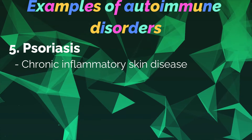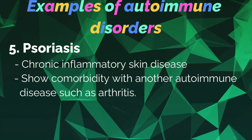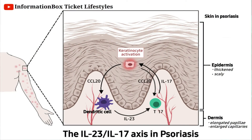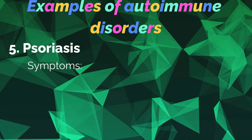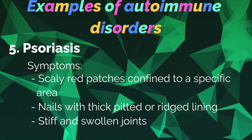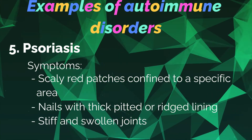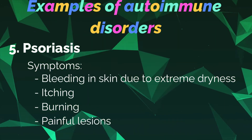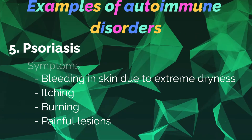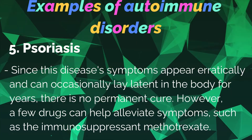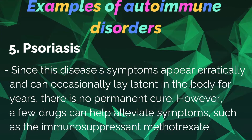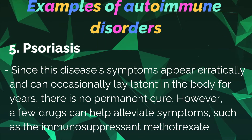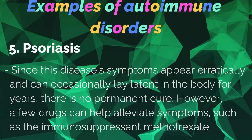Number five: Psoriasis. It is a chronic inflammatory skin disease which shows comorbidity with other autoimmune diseases such as arthritis. The diagram shows the pathogenesis of psoriasis. Symptoms include scaly red patches confined to a specific area, nails with thick, pitted, or ridged lining, stiff and swollen joints, bleeding in skin due to extreme dryness, itching, burning, and painful lesions. Since symptoms appear erratically and can lay latent for years, there is no permanent cure, but drugs like immunosuppressants and methotrexate can help alleviate symptoms.